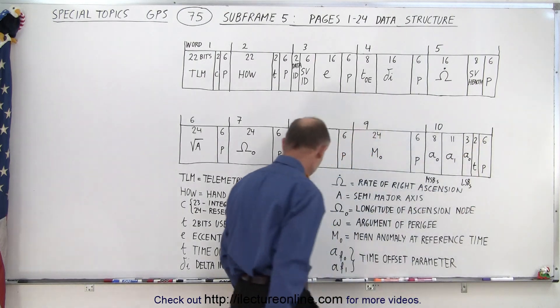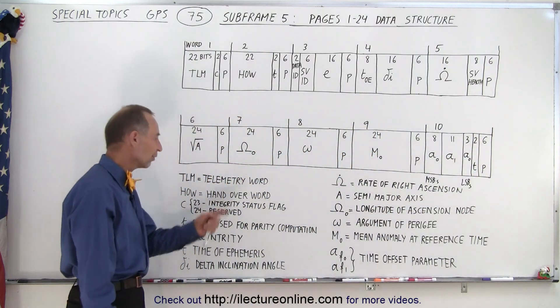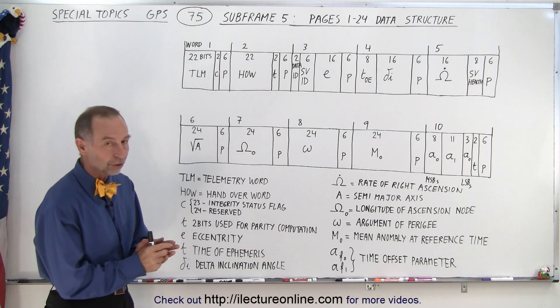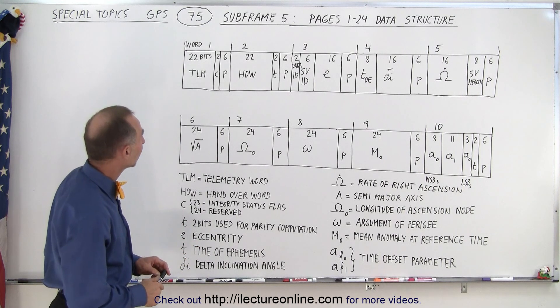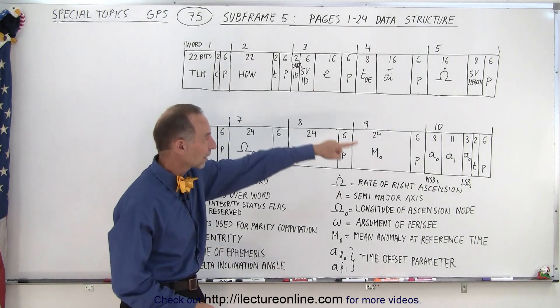And then finally we have another letter t there. T is two bits used for parity computation. So the 10th word also has two additional bits for parity computations. So we have that here in word two and we have that in word 10.